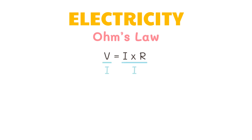Now, we can cancel out current on the right side, which leaves us with only resistance. We have voltage divided by current equals resistance, or resistance equals voltage divided by current.